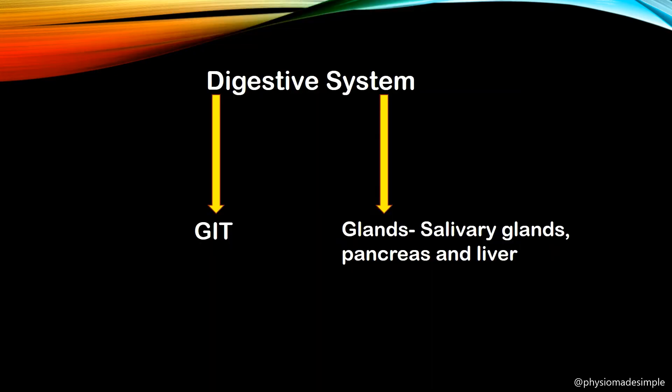The entire digestive system is divided into two parts: the GIT or the gastrointestinal tract, and the associated glands — salivary glands, pancreas and liver. The digestive system is thus divided into two main parts.